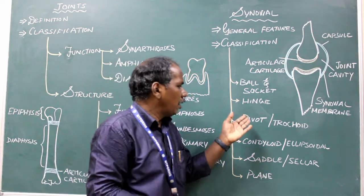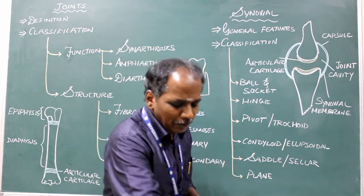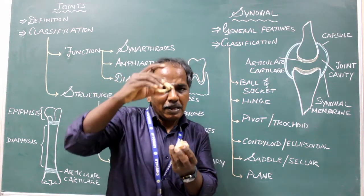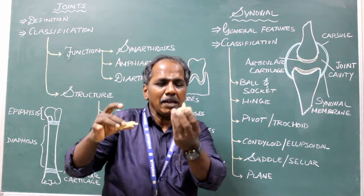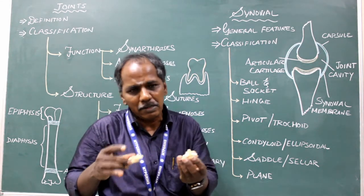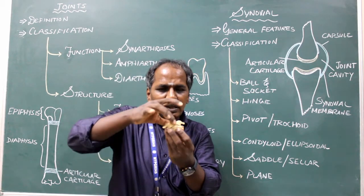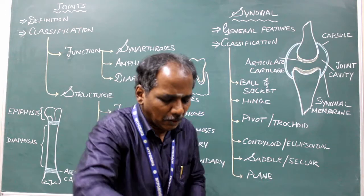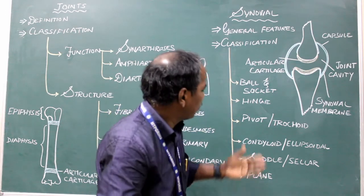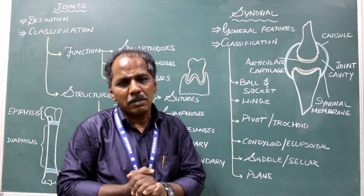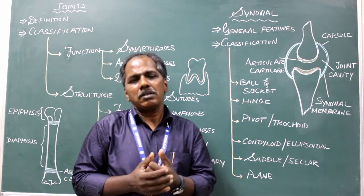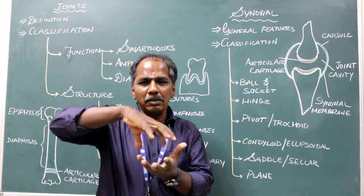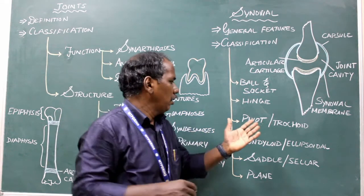Another example of pivot variety: the atlanto-axial joint. The atlas is the first cervical vertebra and the axis has a midline projection called the odontoid process or dens, which articulates within the ring of the atlas. So the atlanto-axial joint is a pivot joint. Students sometimes confuse its classification; note it falls under pivot variety.